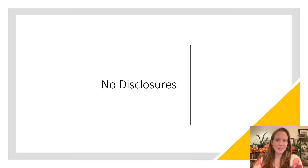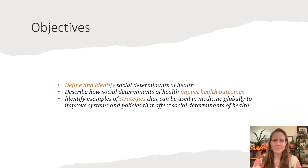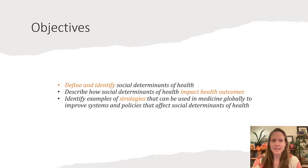So while we all know that social factors outside of patients' control are often a big reason why they're in the emergency department — how much do those factors actually matter and what do we do about it as emergency doctors? The objectives for this lecture are to define and identify social determinants of health, describe how they impact health outcomes, and identify examples of strategies that can be used globally to improve systems and policies that affect social determinants of health.